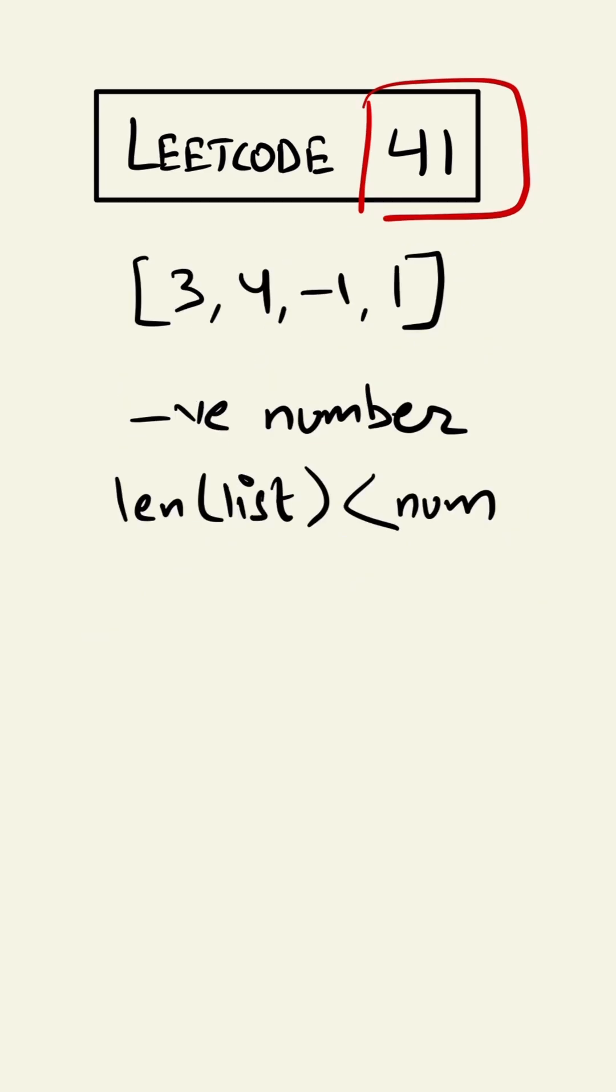Now that we have understood that concept, we'll stay clear of all the negative numbers and all the numbers whose value is greater than the length of the list.